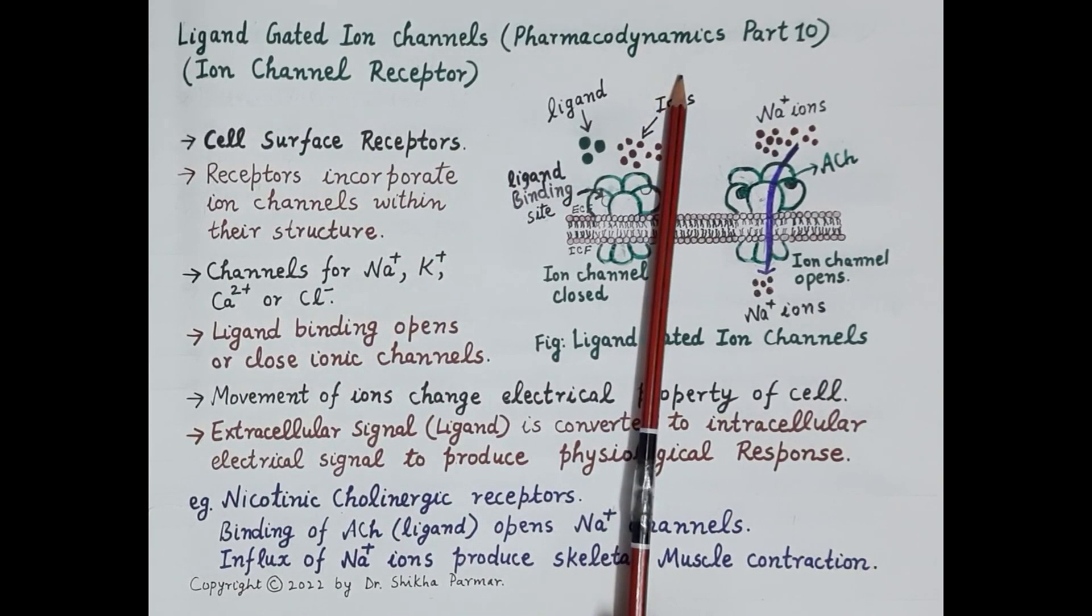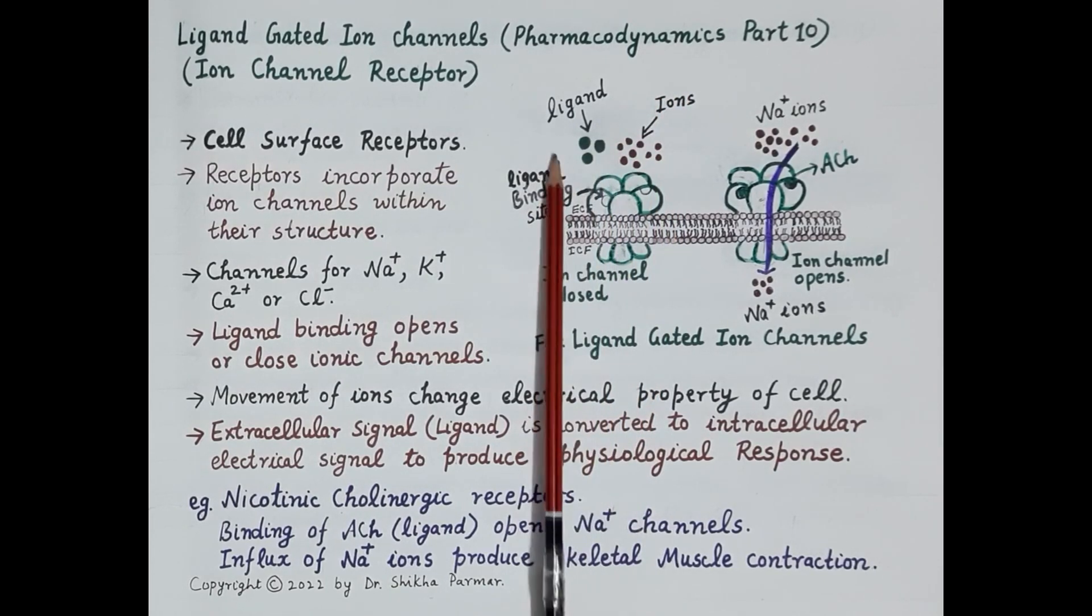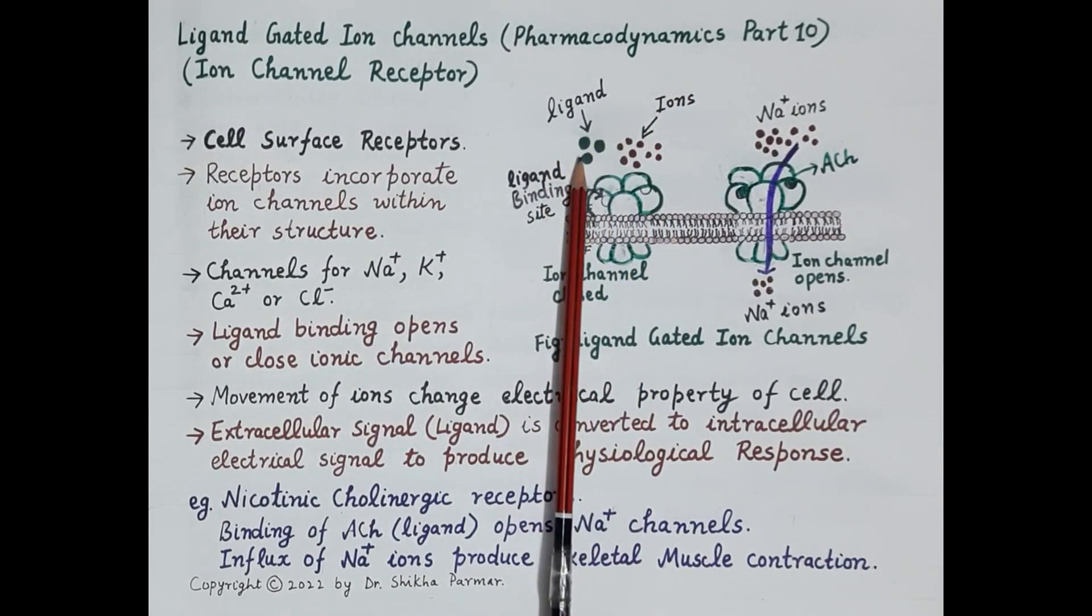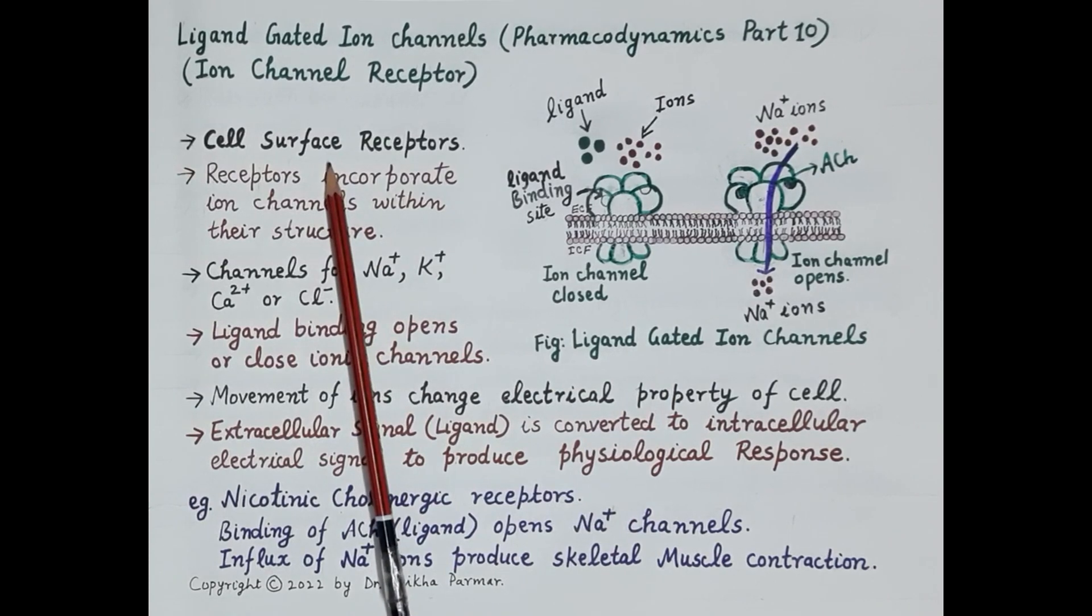As we all know, transducer mechanism is a process by which an external signal in the form of a ligand is converted to biological response by a cell. Ion channel receptors are cell surface receptors.